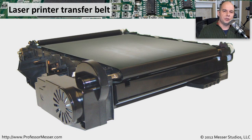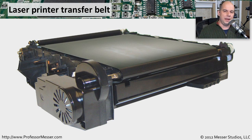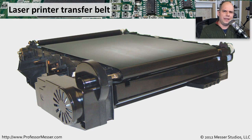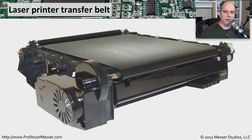Another component is the transfer belt, which is commonly found in color laser printers, not black-and-white ones. In a color printer, you can't mix all the toners together — each color is separate. The transfer belt moves past all the different color toners so that the complete image is assembled and then transferred to the paper. This is also one reason color laser printers are physically larger than black-and-white ones.